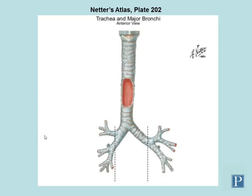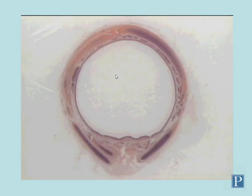This Netter's plate shows the trachea bifurcating into two major bronchi going into the left and right lungs. The bronchi continue to subdivide, becoming smaller as they branch off. The bluish structures in the illustration are rings or plates of hyaline cartilage. The trachea is reinforced by rings of hyaline cartilage that go almost completely around its circumference, but they are in fact C-shaped. Here is an actual cross-section of the trachea.